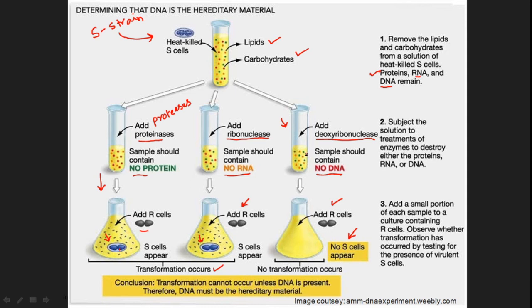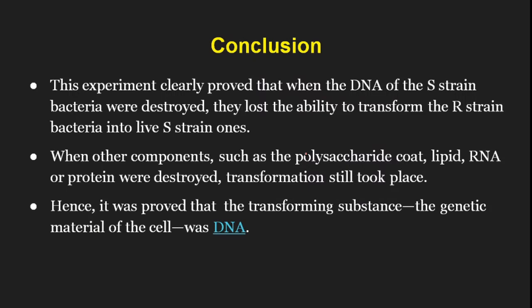This experiment clearly proved that when the DNA of the S-strain bacteria was destroyed, they lost the ability to transform the R-strain bacteria into live S-strain bacteria. When other components such as the polysaccharide coat, lipid, RNA, or protein were destroyed, transformation still took place. Hence, it was proved that the transforming substance — the genetic material of the cell — was DNA. This was the first evidence that the transforming principle or the genetic material is made up of DNA.